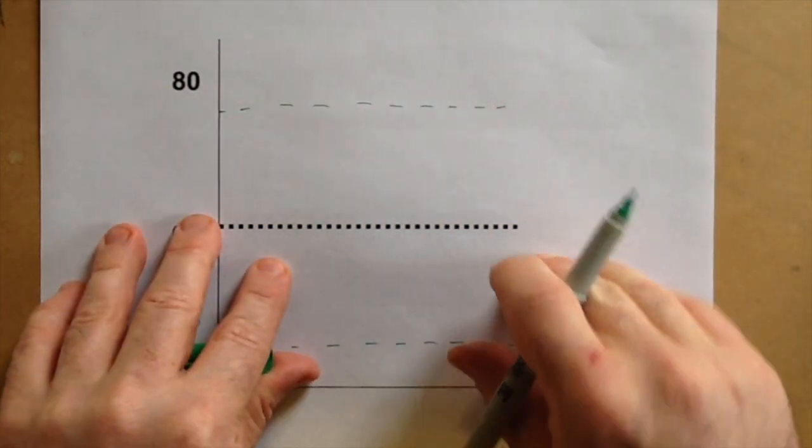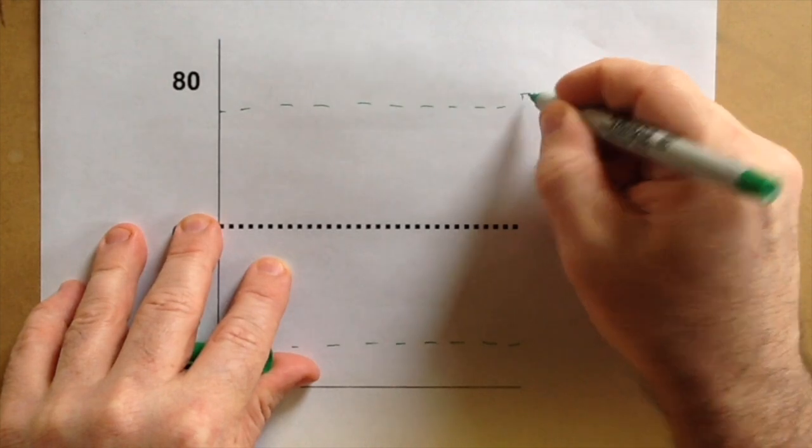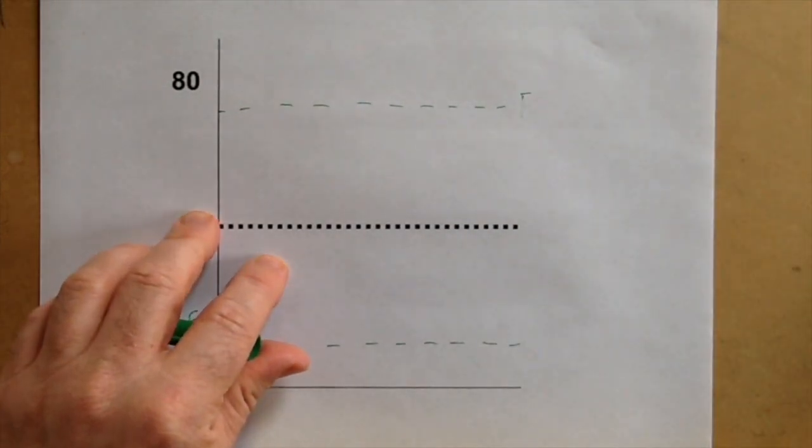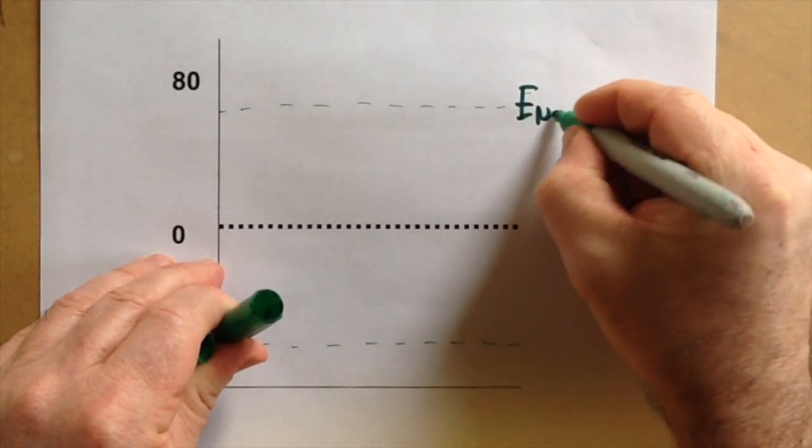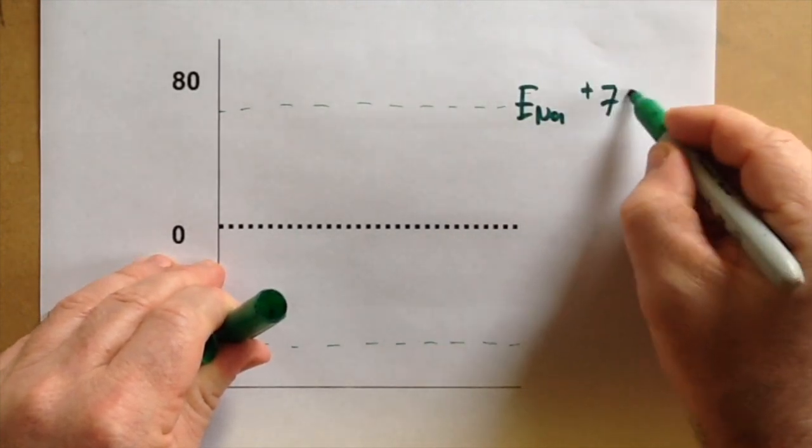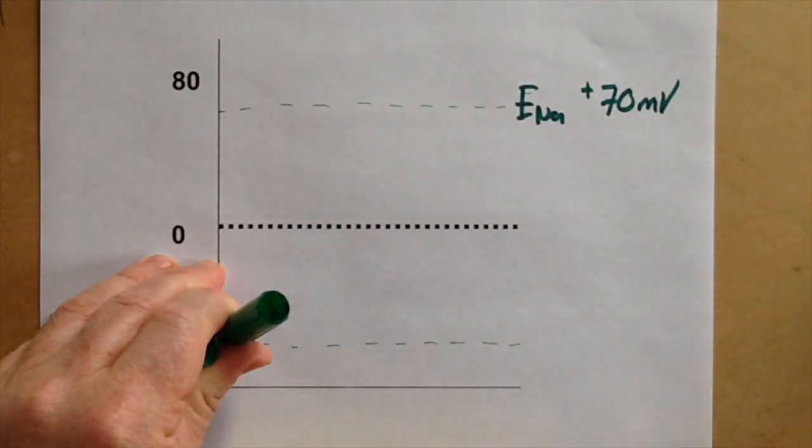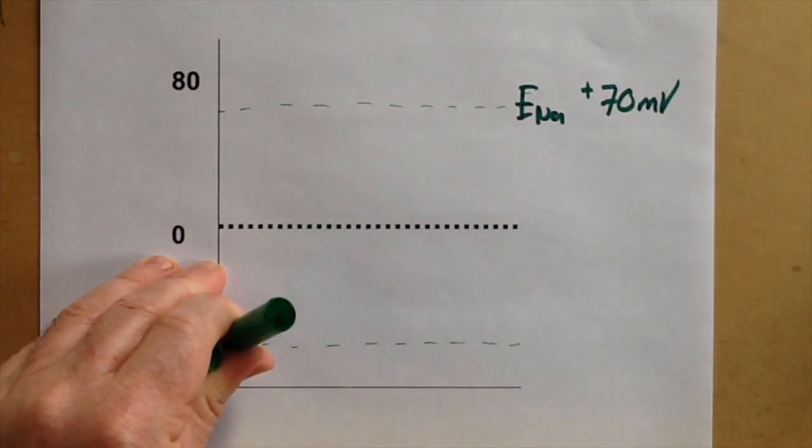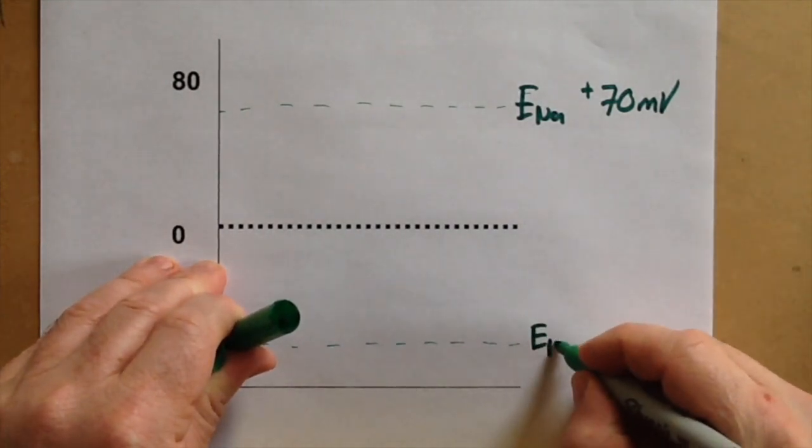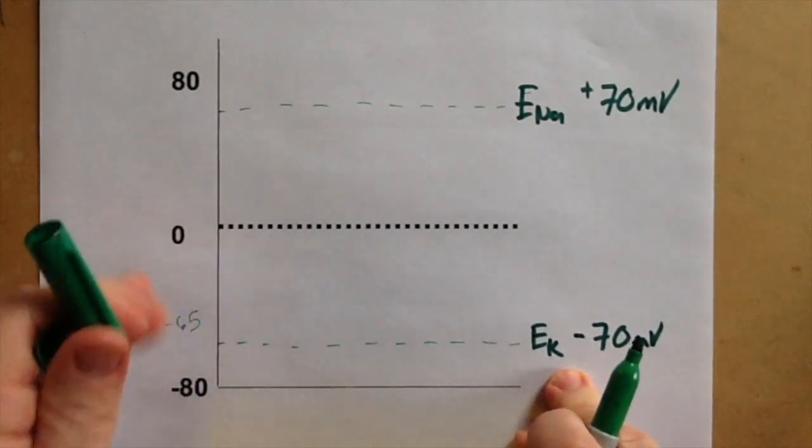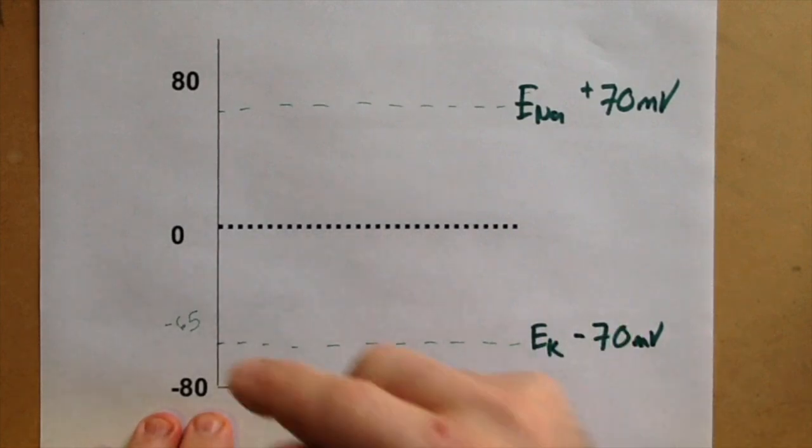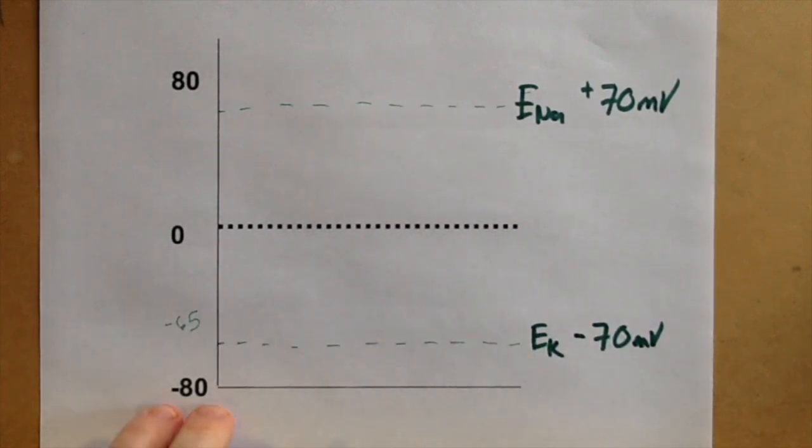We're going to add on some equilibrium potentials that are typically found in cells. So we would have an equilibrium potential for sodium or an ENa of something like plus 70 millivolts. This is the voltage that sodium would like the cell to be at, and an EK of something like minus 70 millivolts. The resting membrane potential is at minus 65 millivolts because of the action of leak channels.